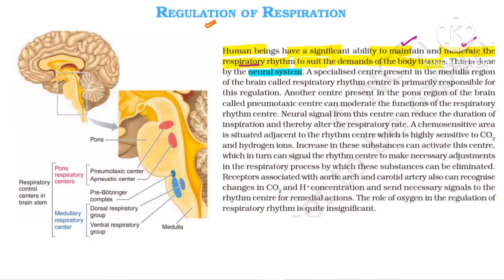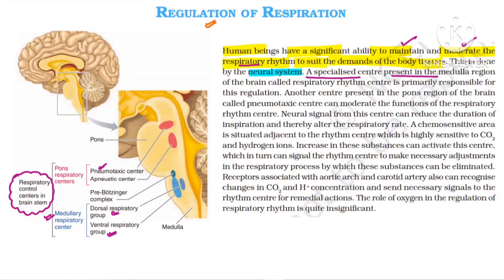Now, just try to understand one diagram. See here — respiratory control centers in the brainstem. This is in the medullary region. Two respiratory groups are present: dorsal respiratory group and ventral respiratory group. These are present in the medulla region. And in the pons, the pneumotaxic center is present. Our focus is on this. So the respiratory rhythm centers are the dorsal respiratory group and ventral respiratory group.